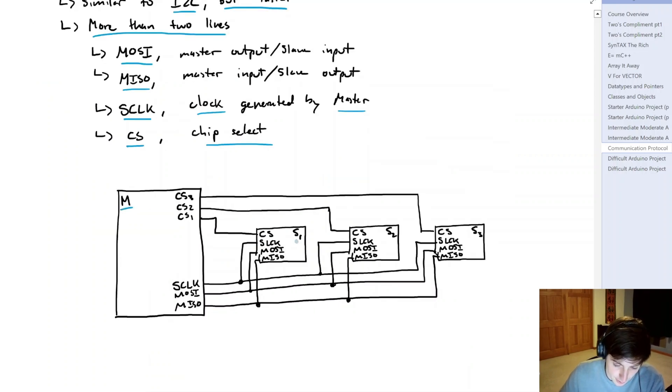And if we look at the topology for this, right here we have a master, and then these smaller devices are slave one, slave two, and slave three. So we have our clock, MOSI, and MISO signals that go to each device. But now we have these chip selects, and that's also going to help us select which chip we want to use.